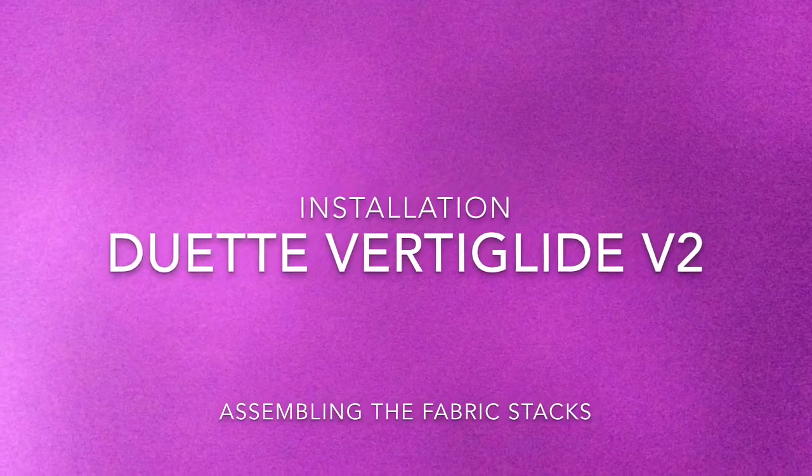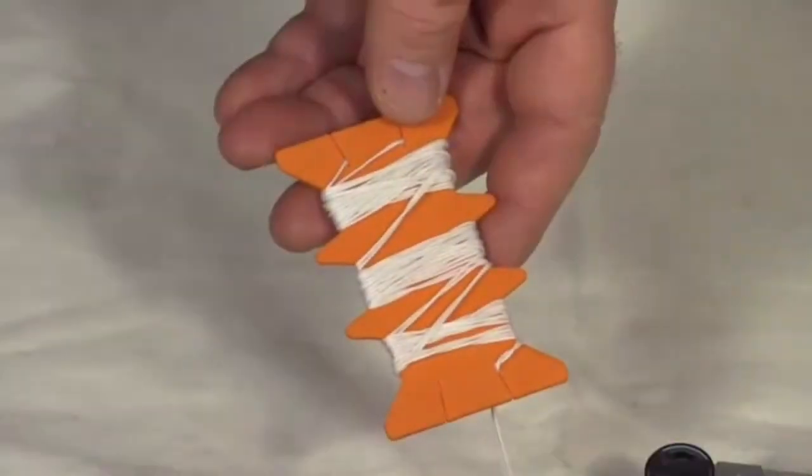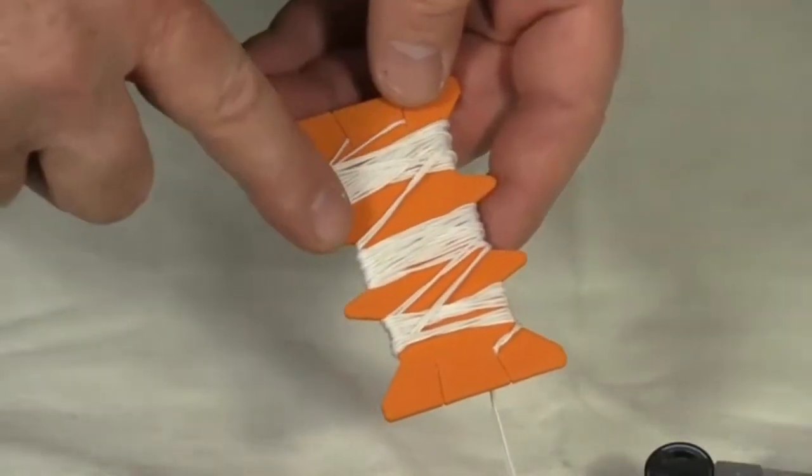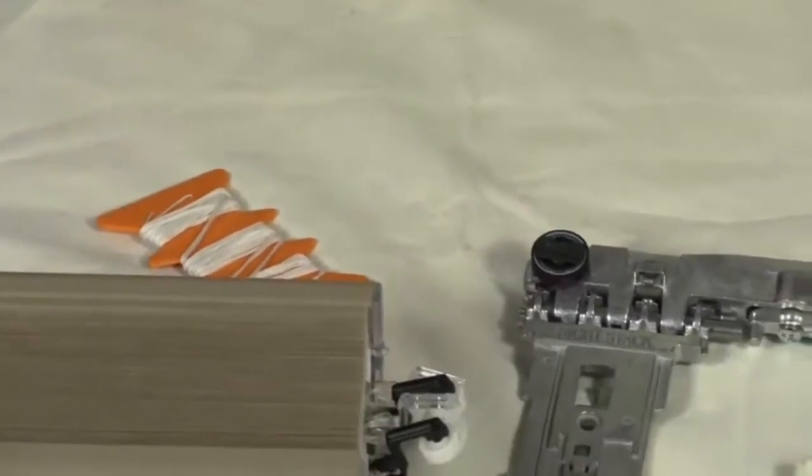Vertiglide 2.0 Assembling the Fabric Stacks. Unpack on a clean surface and do not unwrap the cords from the cord organiser until the rails and the fabric panels are installed.